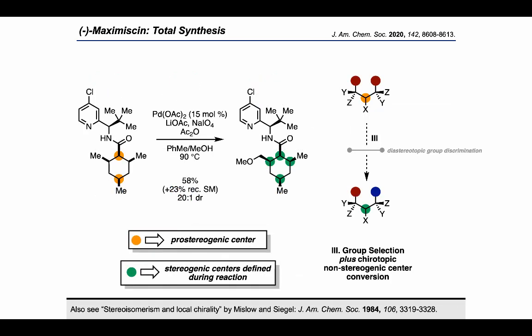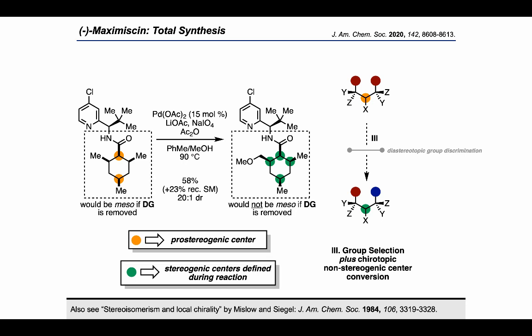We can see this if we go back to the C–H functionalization reaction. Applying this conceptual framework, we can see how four stereocenters are being defined in this step. The methyl groups on the left and right of the substrate are already attached to stereocenters — it's not that we're creating new stereocenters, but rather making those stereocenters in the starting material into ones that don't add up to a meso compound when we remove the directing group. Furthermore, we're converting two non-stereogenic chirotopic centers (marked in orange) into stereocenters (marked in green). For more on the distinction between chirotopicity and stereogenicity, see the paper by Mislow and Siegel referenced on screen.